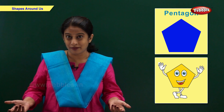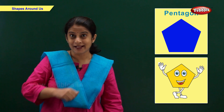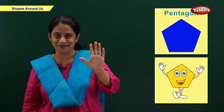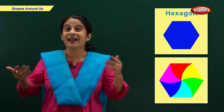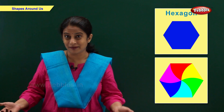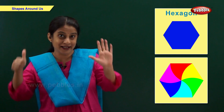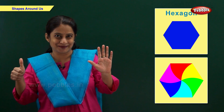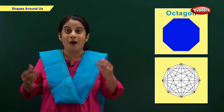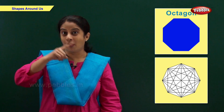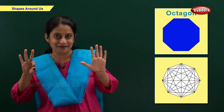Pentagon — a pentagon has five sides. Hexagon — a hexagon has six sides. Octagon — an octagon has eight sides.